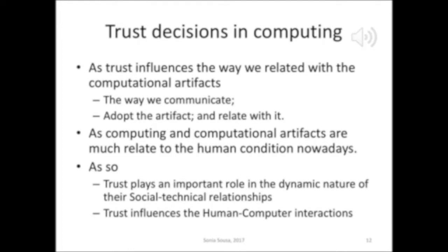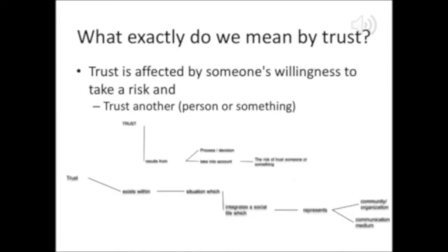Trust influences the way we relate with computational artifacts — in terms of the way we communicate, the way we adopt the artifacts, and the way we relate to the human conditions nowadays. As such, trust plays an important role in the dynamic nature of social-technical relationships, as it influences the way we interact with the computer.